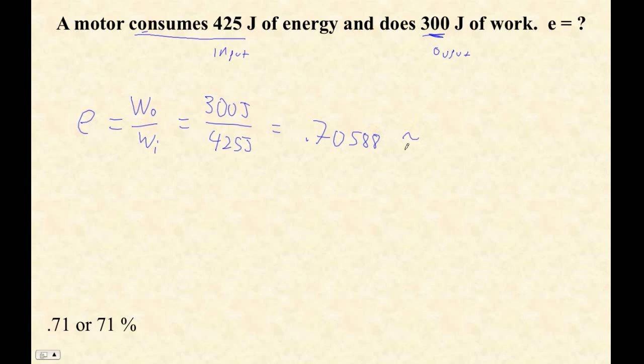So that's about 0.71 with two sig figs. It looks like we only have one sig fig, right? And then you could also write it 71% if you wanted to. Thank you.